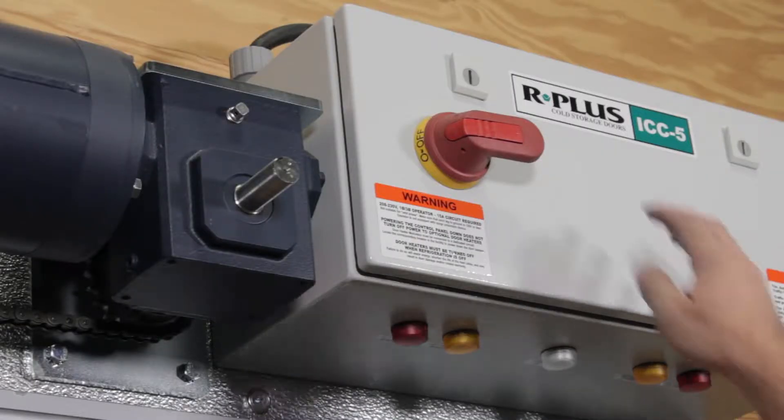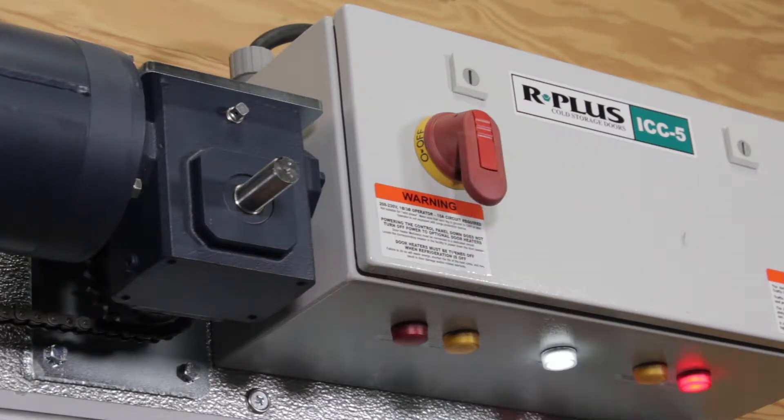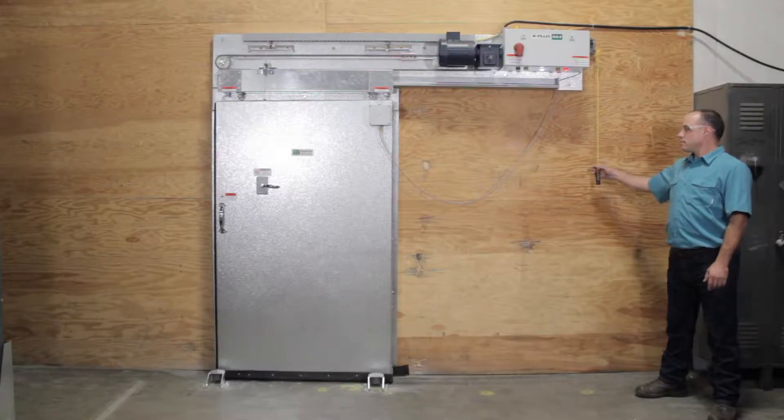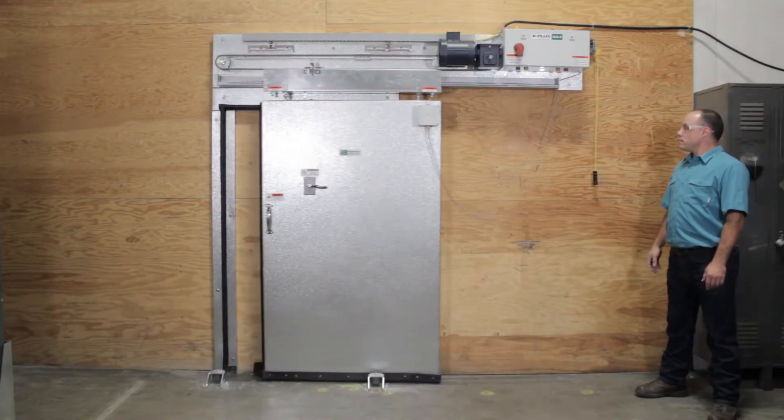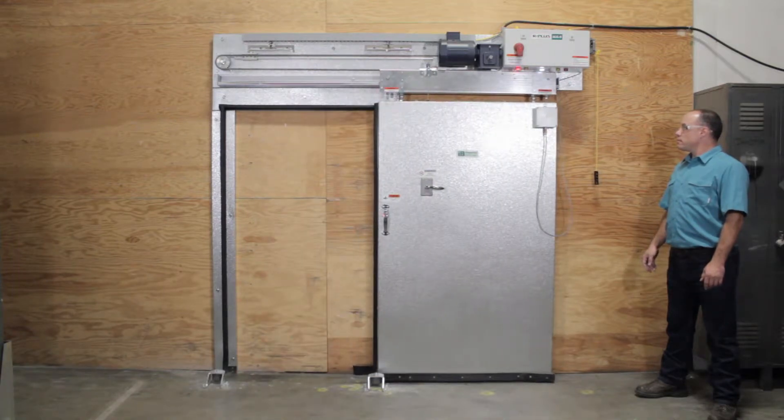Now turn the power back on at the controller and test cycle the door through its complete operation. You have completed this adjustment if you are satisfied with the chain slack following the test cycling.